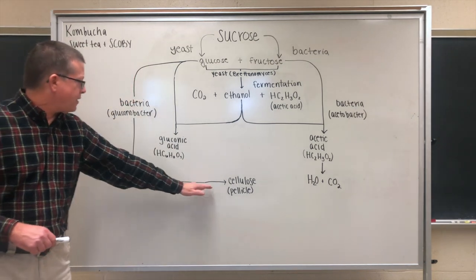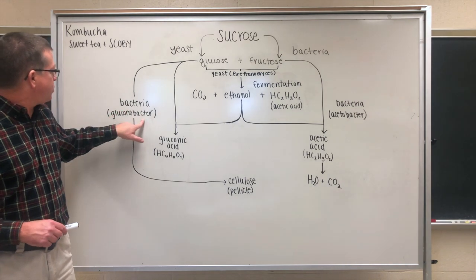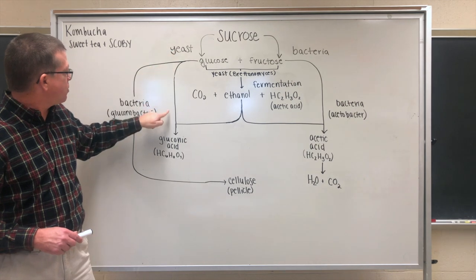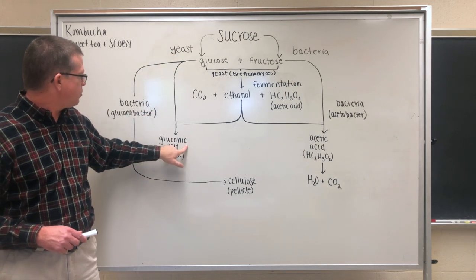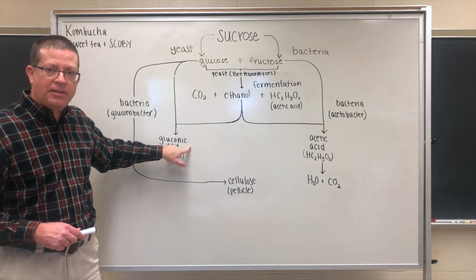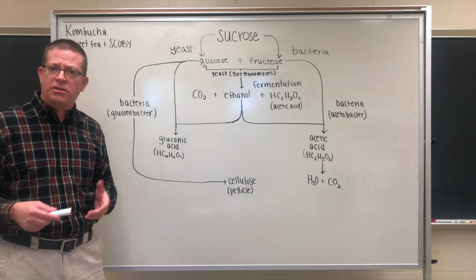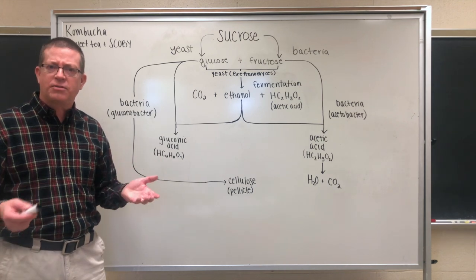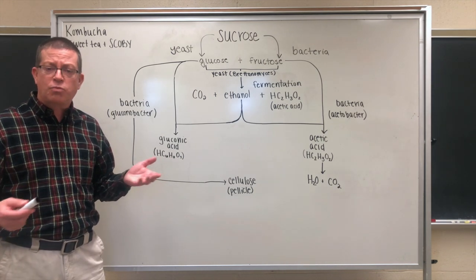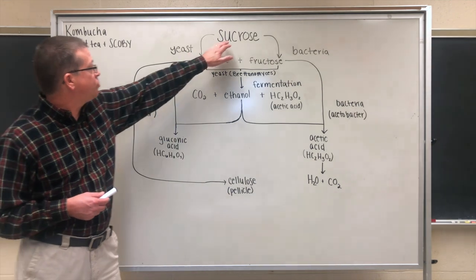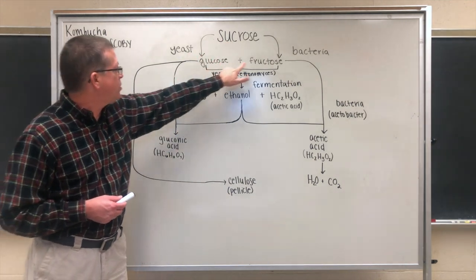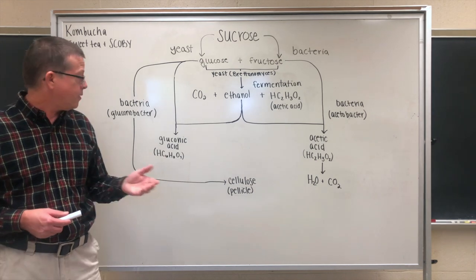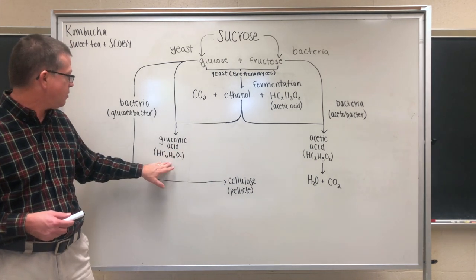Staying with the gluconobacter, there is another pathway: glucose can also go through a separate pathway to form gluconic acid, which is one of the important acids that contributes to the sour taste of kombucha. Kombucha is a nice combination of sweet and sour — the sweetness comes from residual sucrose plus any leftover glucose and fructose, and the sourness comes from the acids, one of which is gluconic acid.